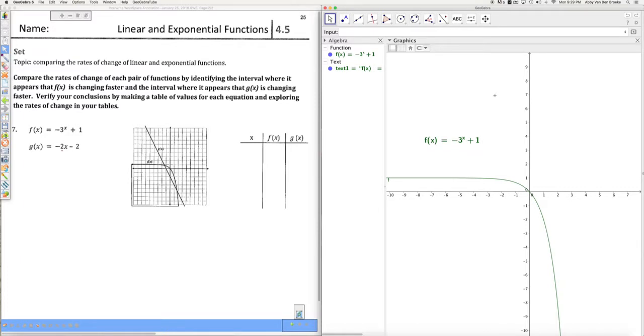The second step would be to graph the next function g of x. And I'm typing it just as I see it. So there you have it. Two functions. I'm also going to drag that over. Change the scale.